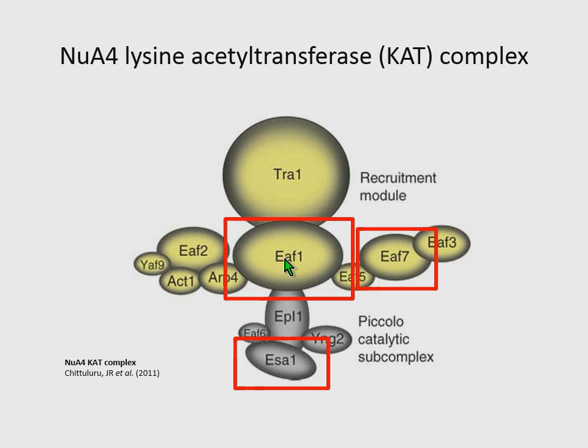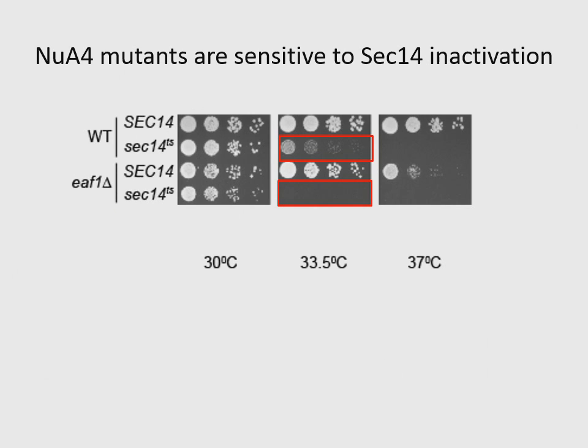The first screen we did was crossing different KAT mutants and KDAC mutants with the SEC14 TS strain to determine whether it would affect growth. What we found consistently was that the NeoA4 mutant EAF1 delete, at the semi-permissive temperature, acquired a synthetic lethal phenotype. This phenotype was consistent with other NeoA4 mutants such as EAF7 and this ESA1 TS strain, all of which created a synthetic lethal phenotype with SEC14 TS.